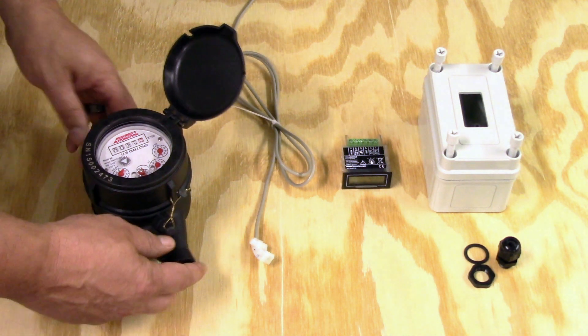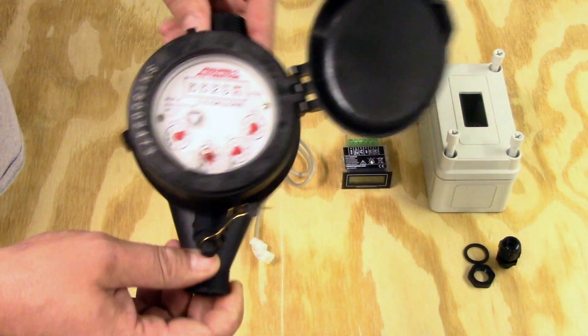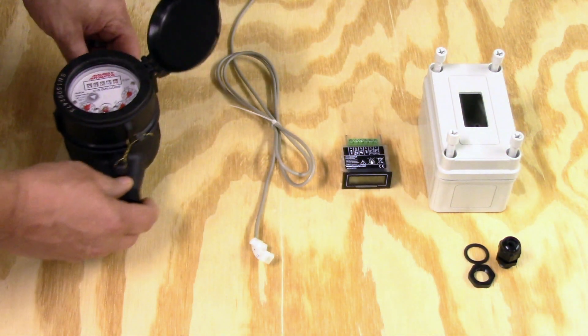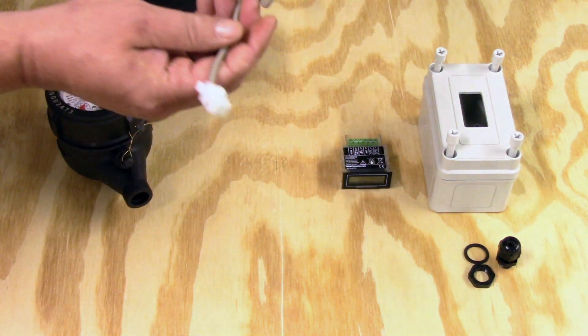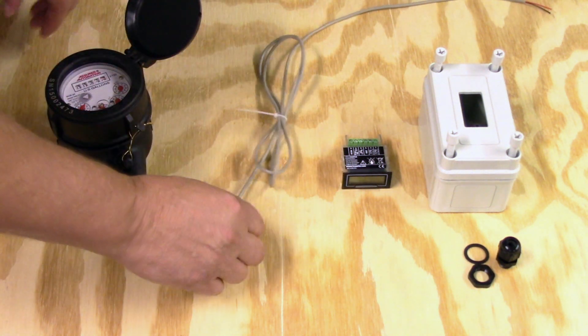Start by going over the components. Here of course is the water meter itself. This is our WMPC. It's one of our best-selling meters.